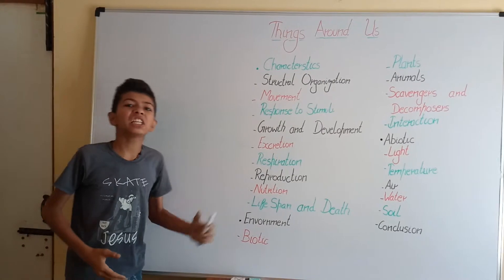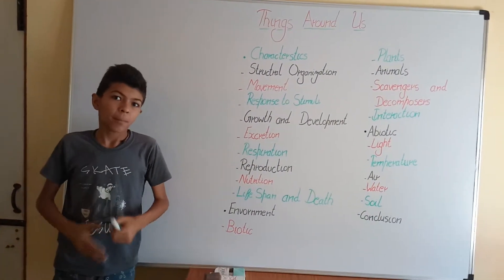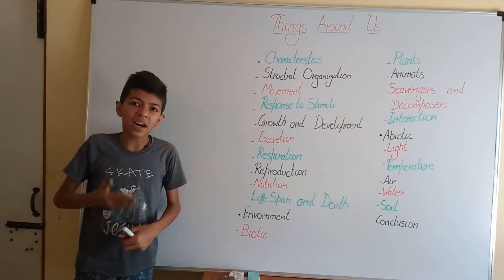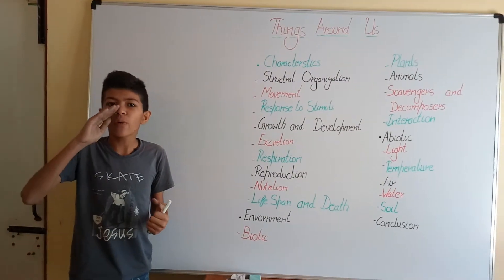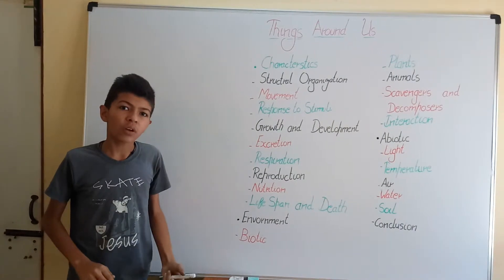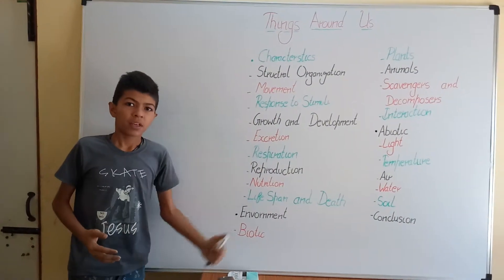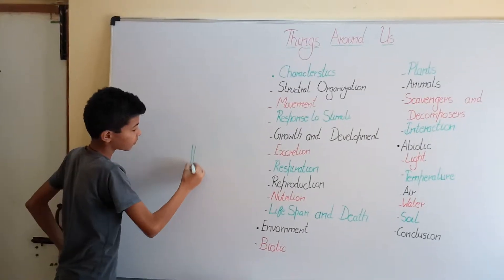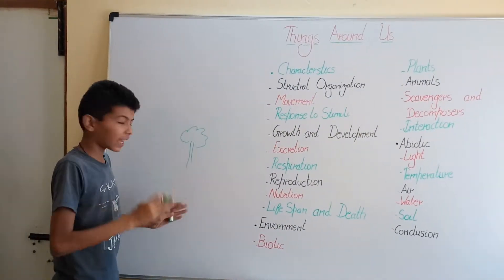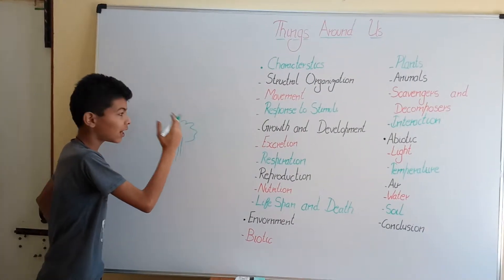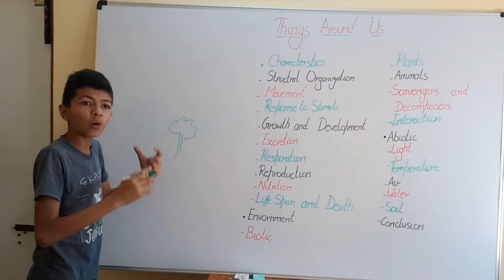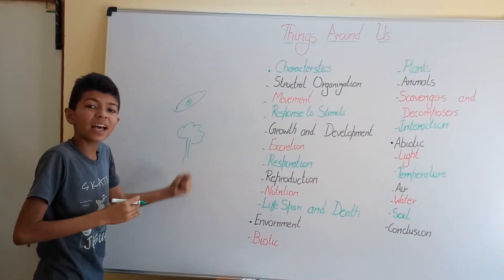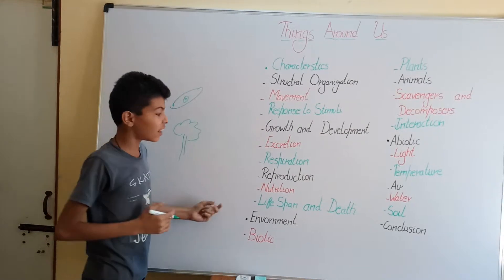Then we have respiration. Some people think respiration is just breathing in and out, but it is actually the process of breaking down food to release energy. Taking in air is called inhaling and pushing air out is called exhaling — and these two processes together are called breathing. Plants also breathe through small pores in their leaves called stomata, which are used for the exchange of gases.